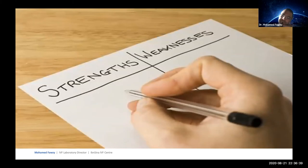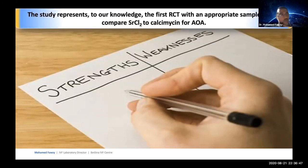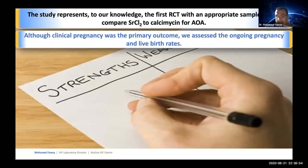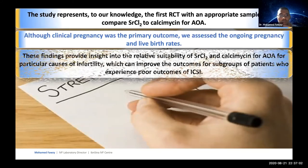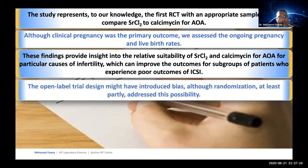This study has strengths and weaknesses. As a strength, it represents the first RCT with an appropriate sample size to compare strontium chloride with calcimycin for AOA, with clinical pregnancy as the primary outcome. We also assessed ongoing and live birth rates. These findings provide insights into the relative suitability of strontium chloride and calcimycin for particular causes of infertility. The open-label trial design might have introduced some bias, although randomization at least partly addressed this.